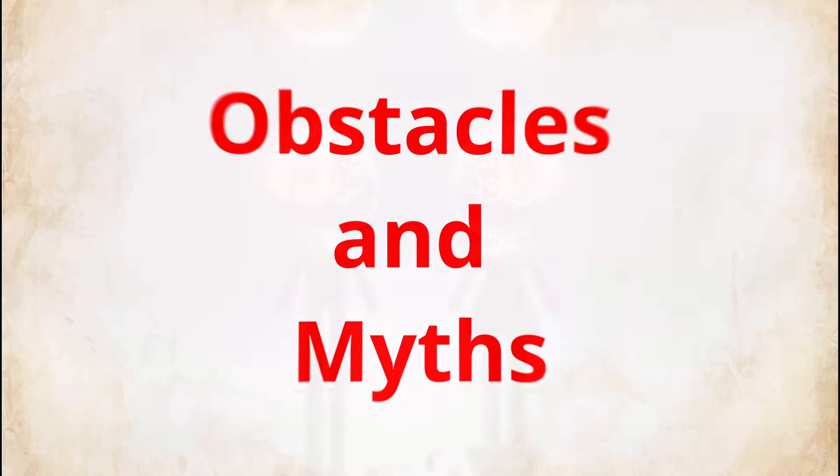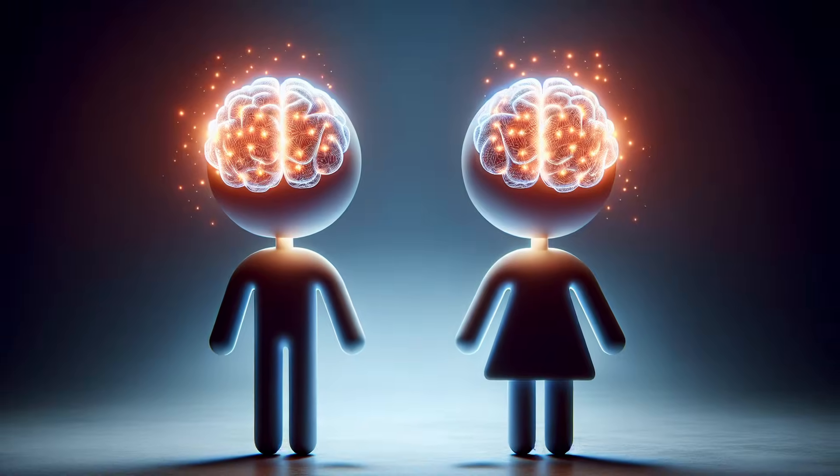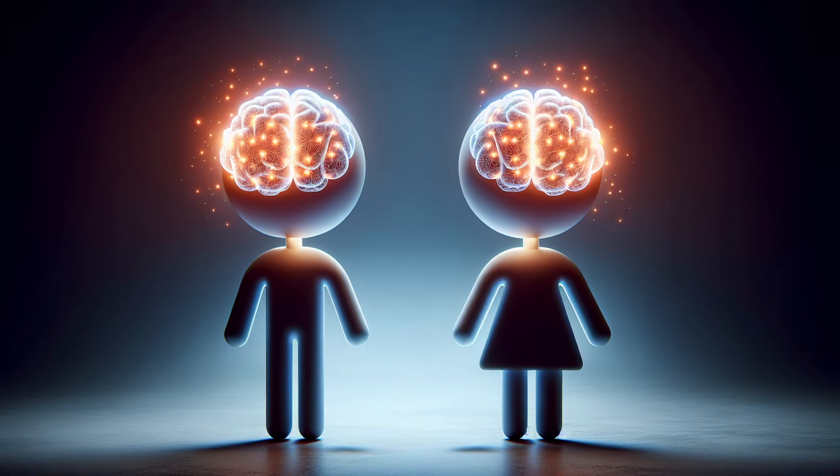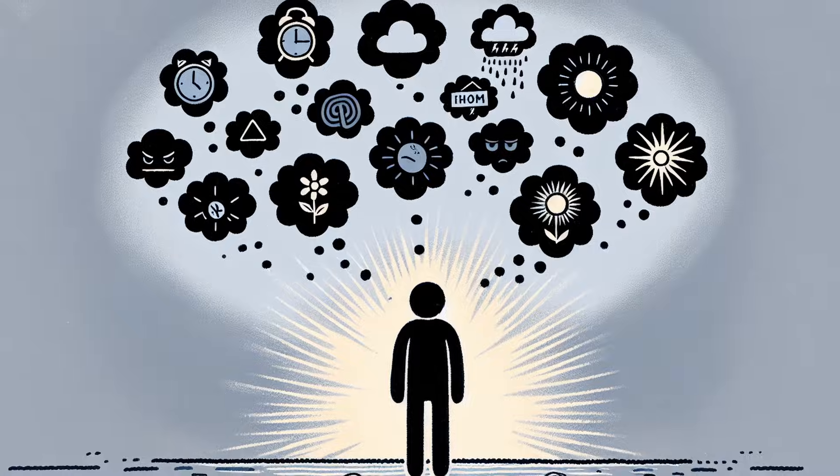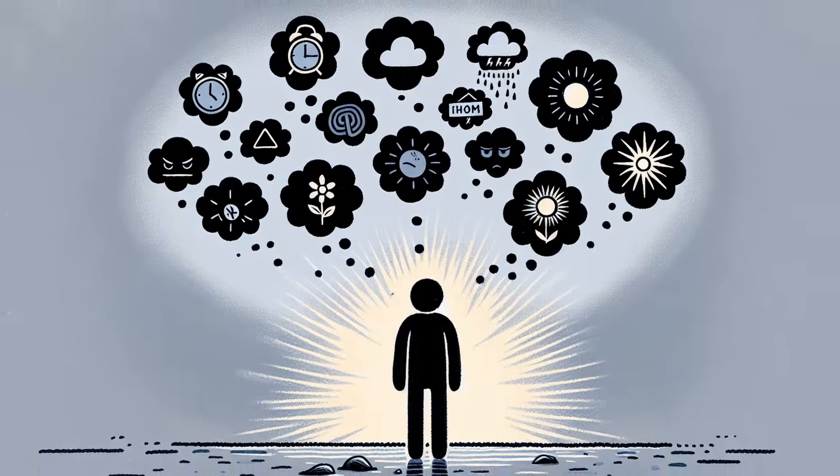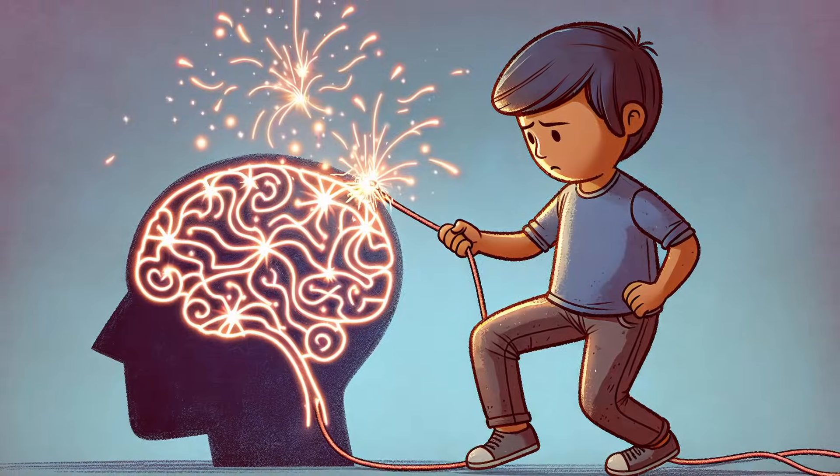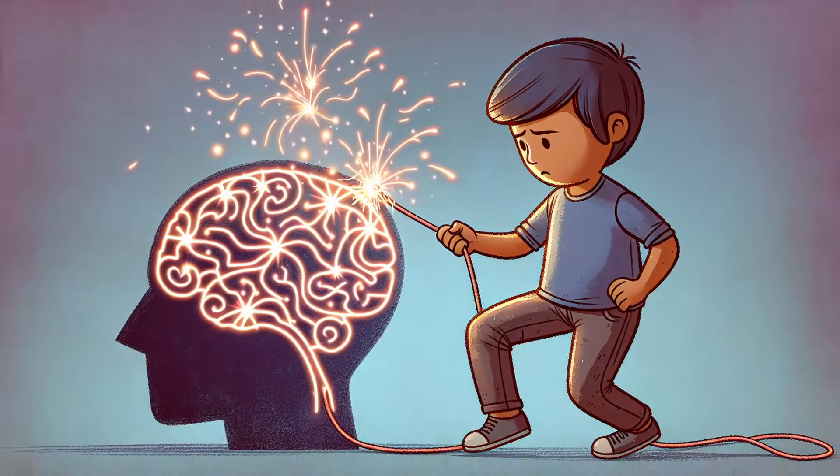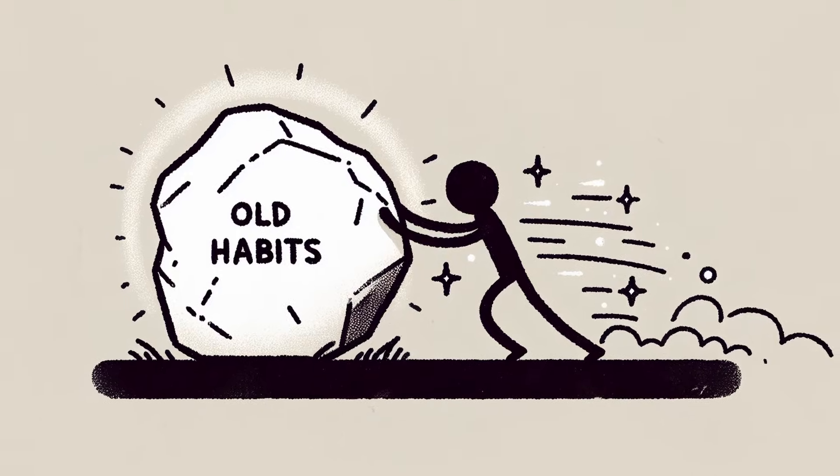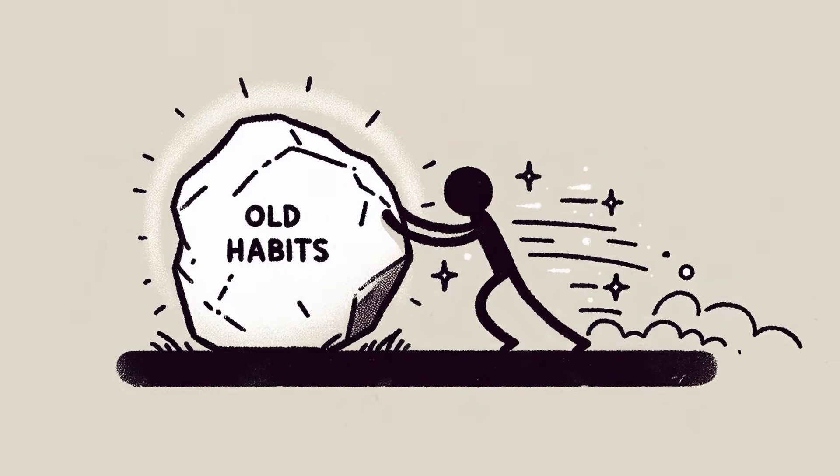Obstacles and myths. Of course there are obstacles. One common myth is that neuroplasticity only works for children. It's true that kids' brains are especially flexible, but adults can change too. In fact, neuroplasticity is now being used in stroke recovery, therapy for trauma, and skill training well into old age.